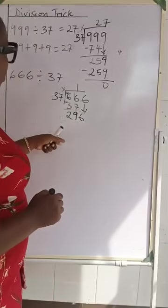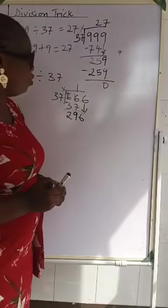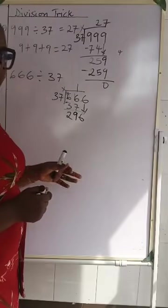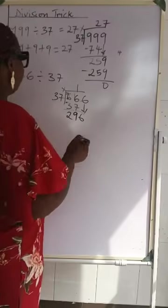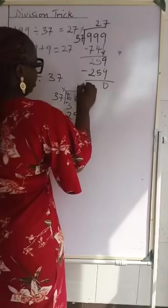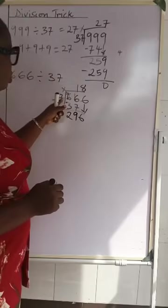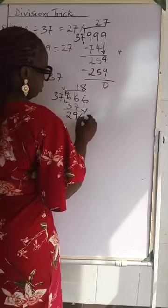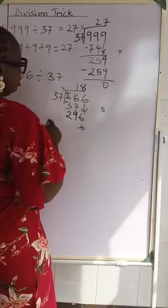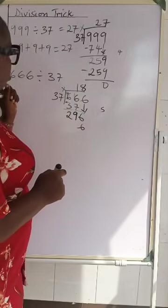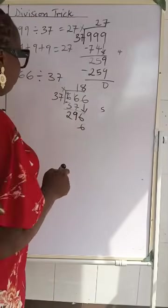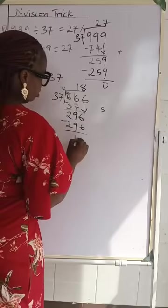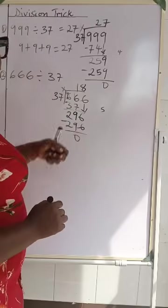So 37 going into 296. How many times would 37 go comfortably into 296? It is going to be 8 times. So 8 multiply 7 is 56. You write your 6 and carry 5. 8 times 3 is 24. 24 plus 5 is 29. So when you take away this, you get 0. And the answer is 18.